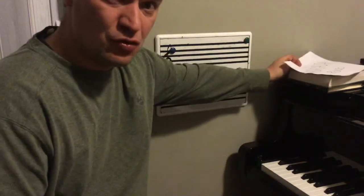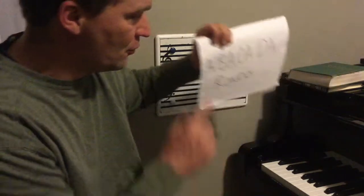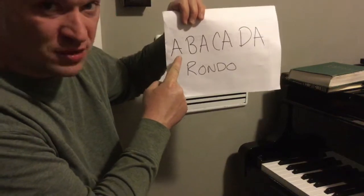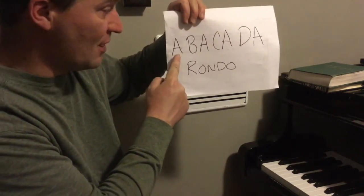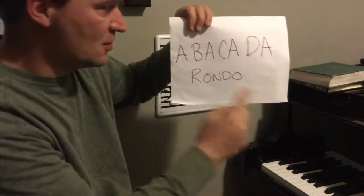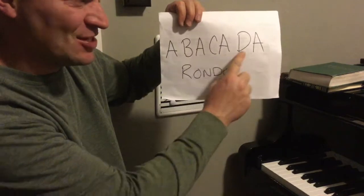Now, form is how you build something. We're going to have four sections: an A section, which happens four times, a B section, a C section, and a D section, and we're going to talk about your very favorite thing.